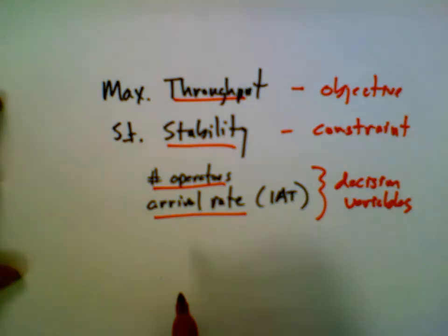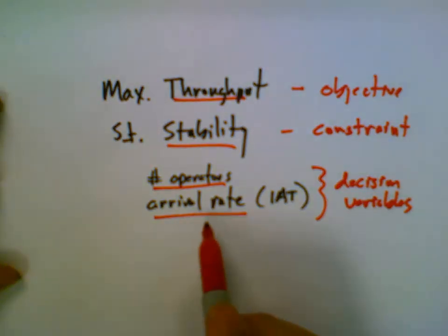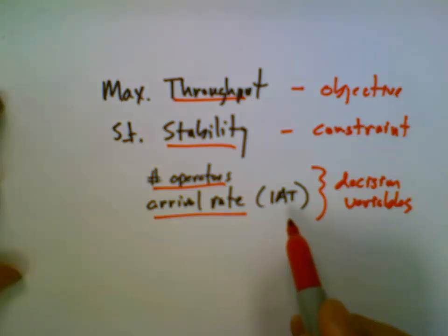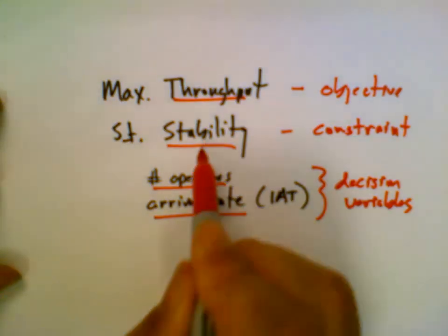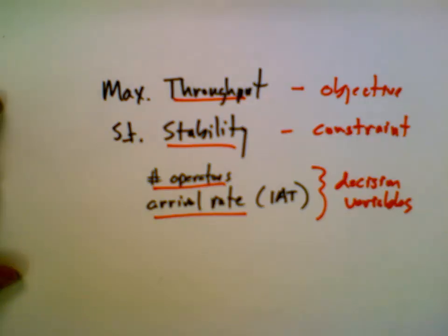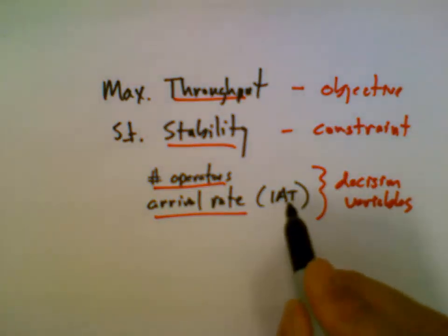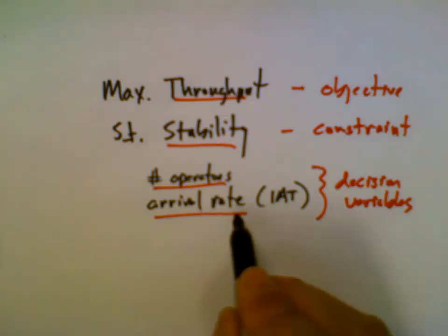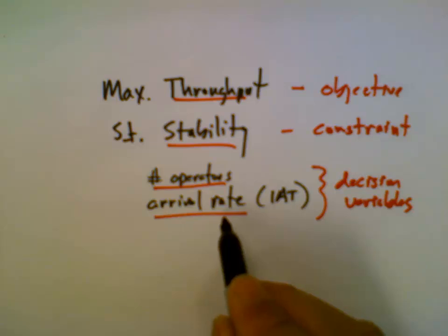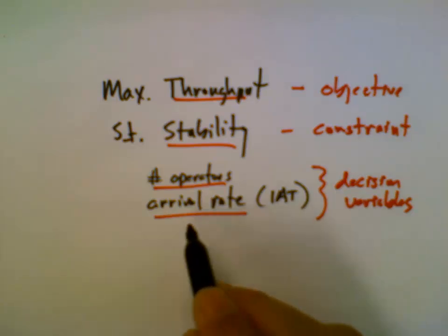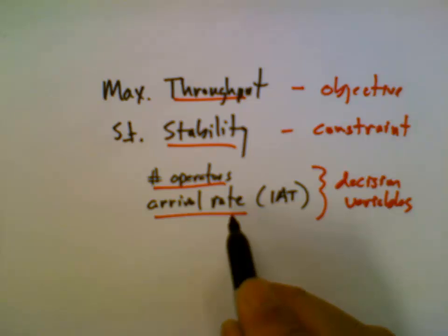The number of operators is pretty simple to define. The arrival rate in our simulation is just specified by the inter-arrival time. But we haven't really talked about how to define stability and throughput in the context of our simulation model. In our first experiment, we reduced the inter-arrival time, which is the same as increasing the arrival rate, while watching the WIP level — both average and ending WIP — to ensure it wasn't growing without bounds. For our optimization model, we want to formalize those two concepts a little bit more.